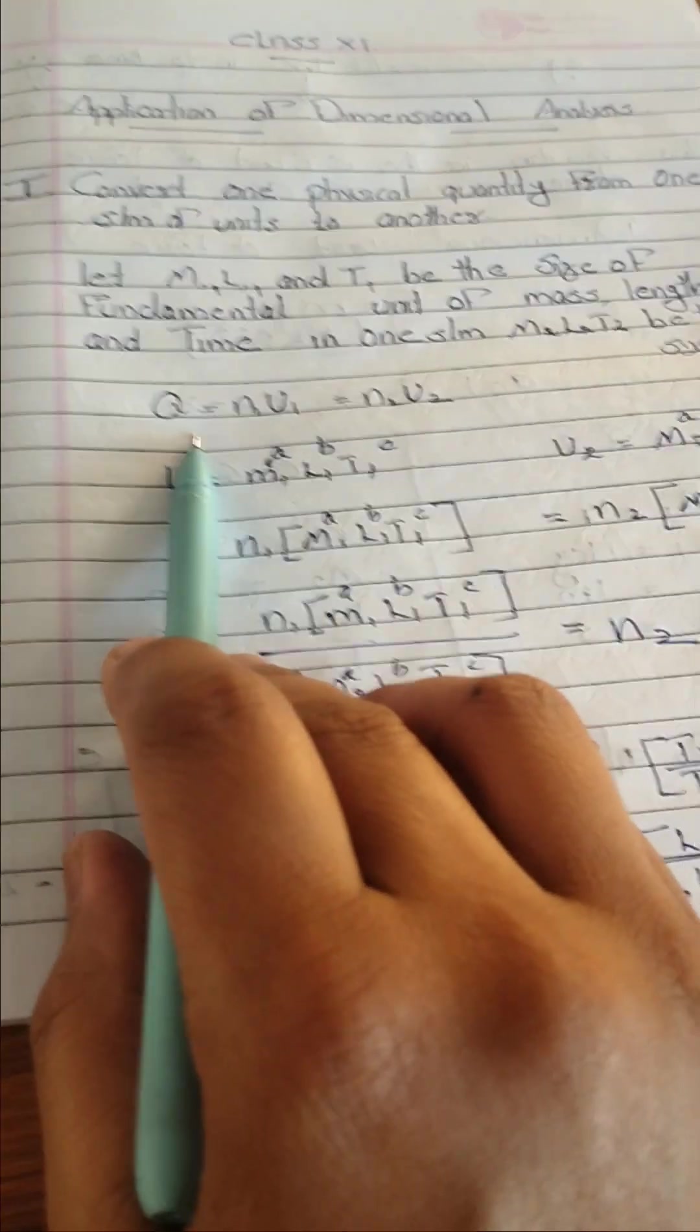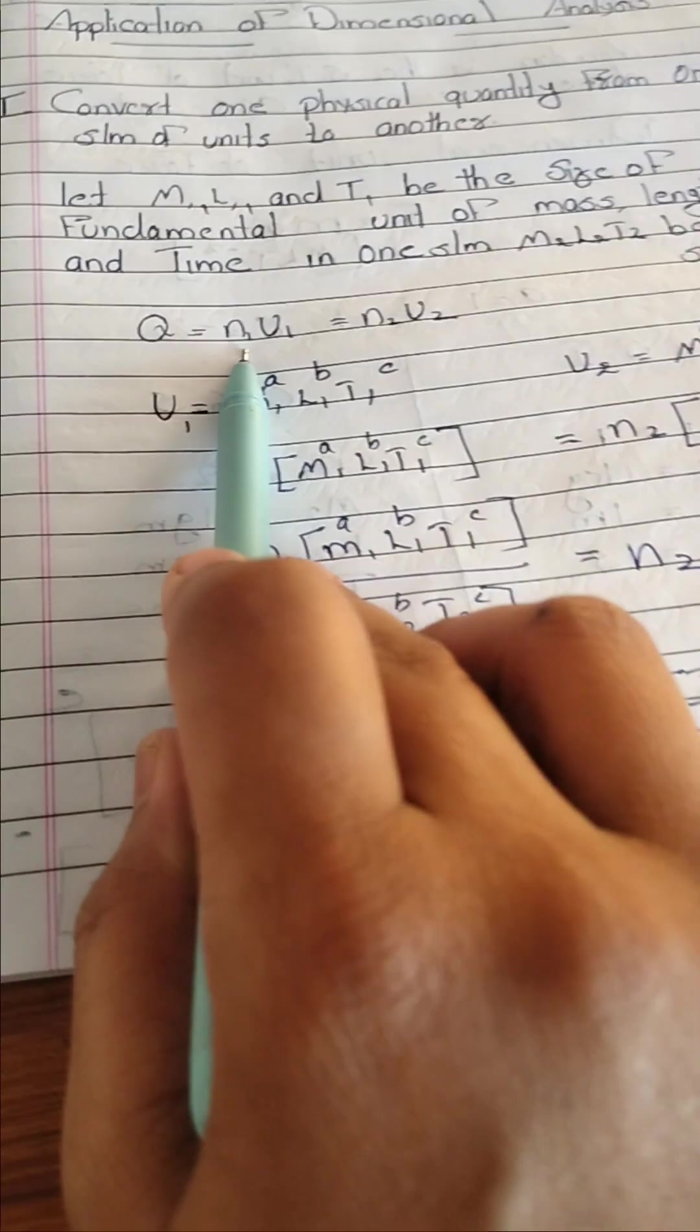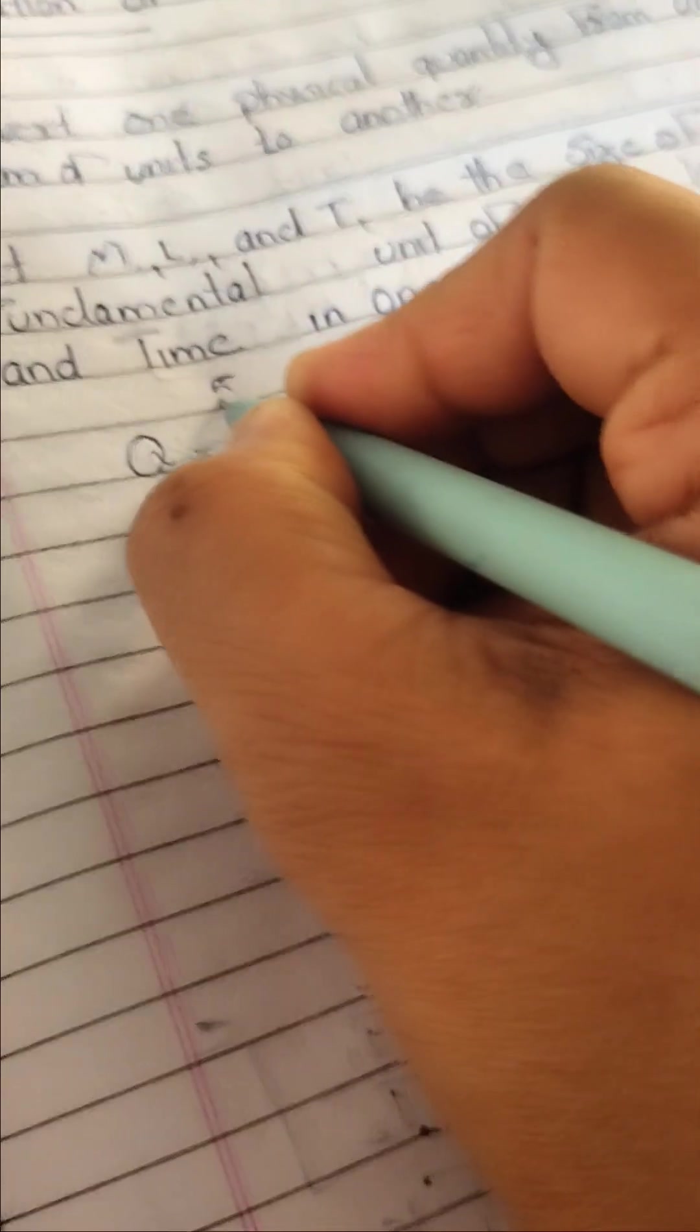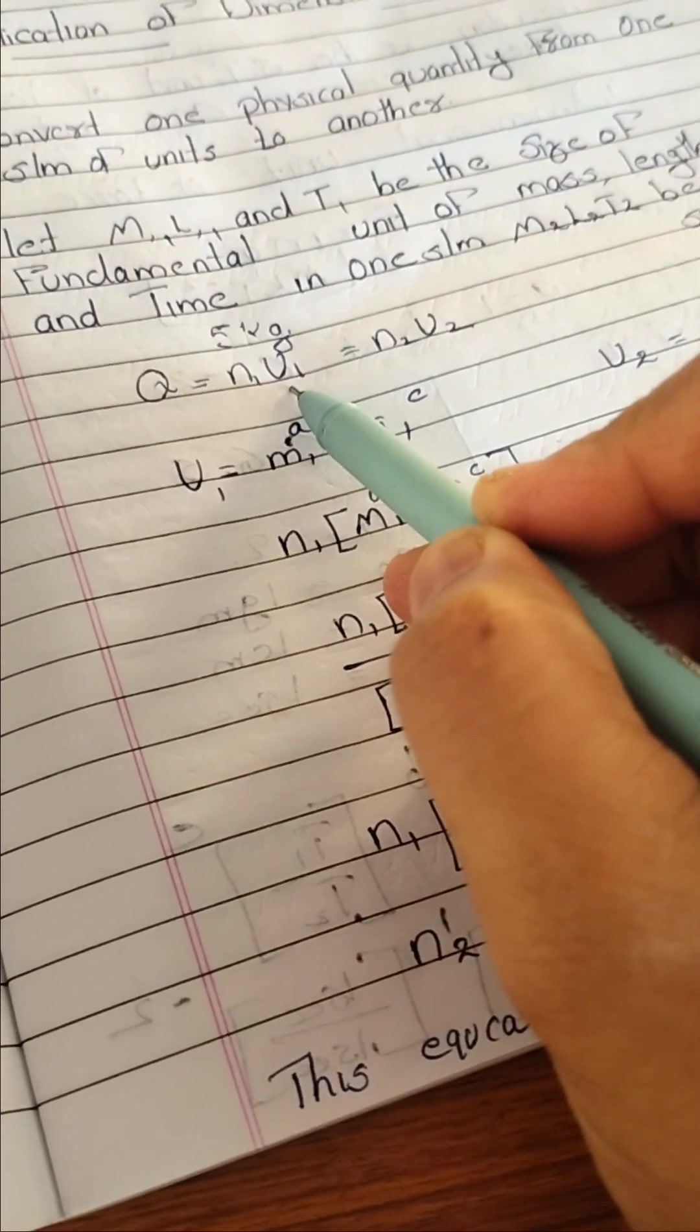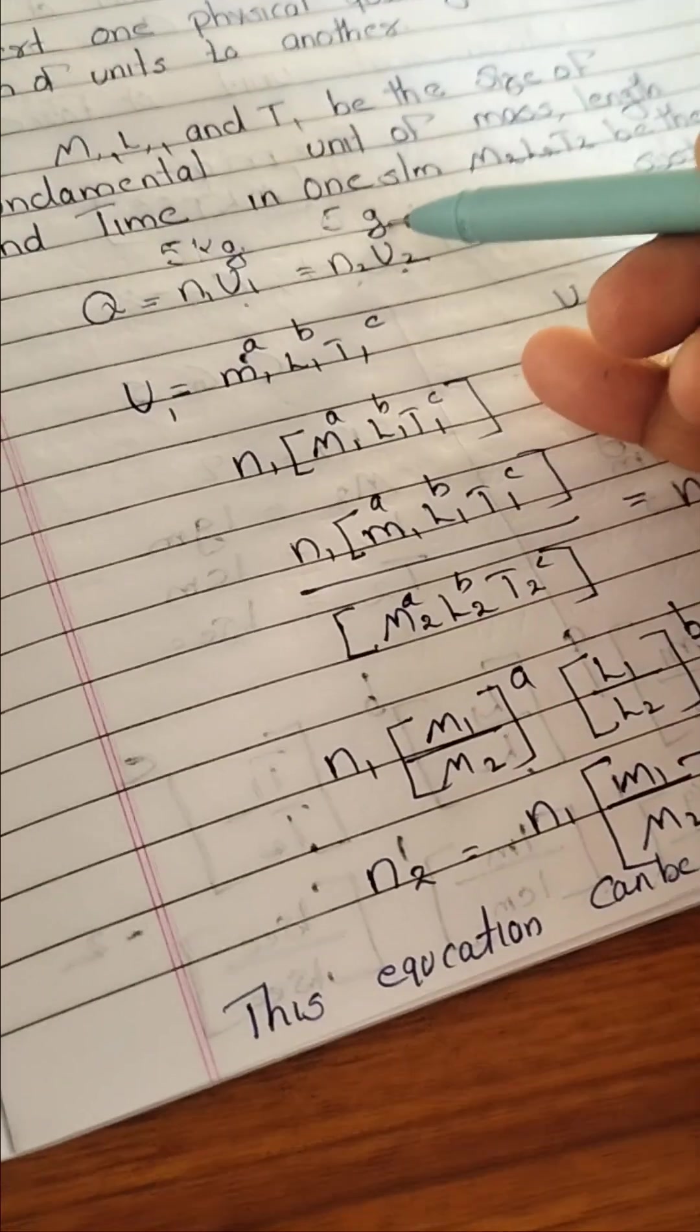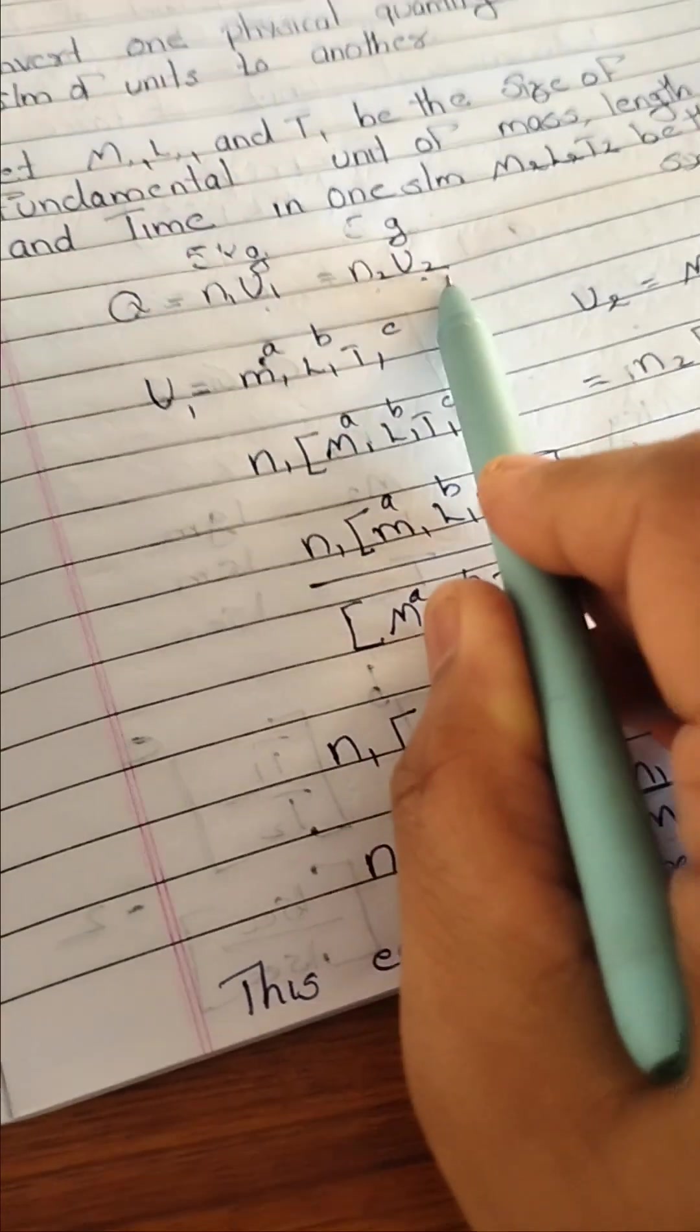So how to convert? We should already studied, M is the symbol of dimension of mass, L dimension of length or distance, T is the dimensional symbol of time. So I am considering M1, L1, T1 be the size of fundamental unit of mass, length and time. Another system of unit, how it will be represent? M2, L2, T2. So the answer is starting with the expression Q equal to NU. What is the meaning of Q? Symbol of a physical quantity. What is N? Number of the quantity, U for unit. Numerical value, unit. N for numerical value.